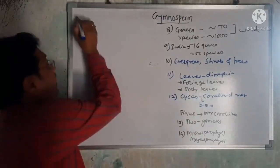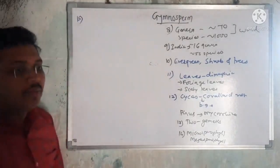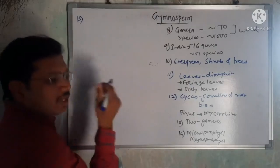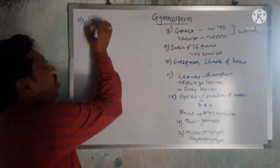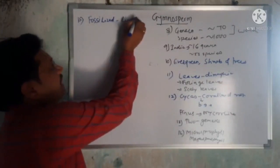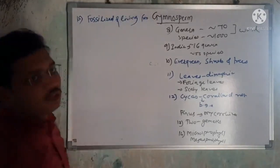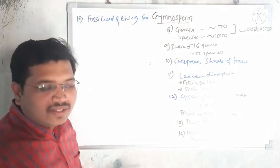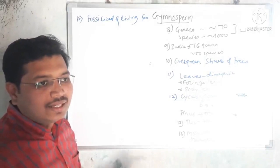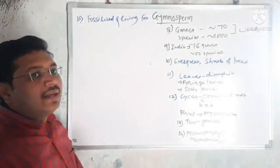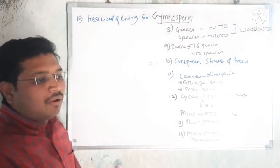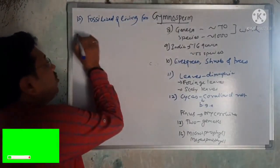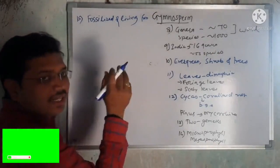Now let's look at some examples of gymnosperms. Gymnosperms are present in both fossilized form and living form. Dead remains are called fossils. Ginkgo biloba, for example, exists in both fossilized and living forms, making it a living fossil. Gnetum and Cycas are other examples of gymnosperms.